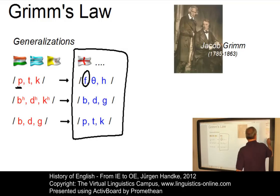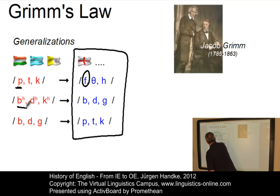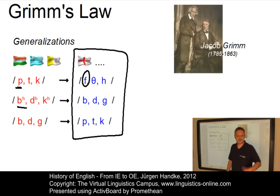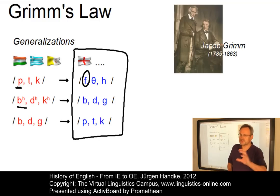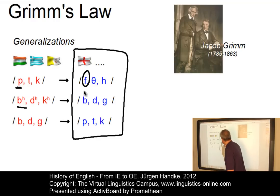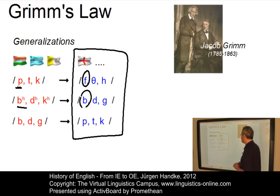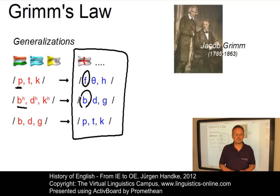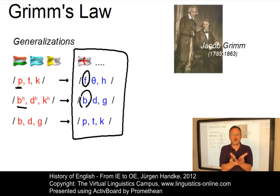Or take the initial aspirated voiced bilabial plosive as in Sanskrit 'bhrata.' In Classical Greek it was 'phrater,' and in Latin it was similar but labiodental, 'frater.' In Germanic the result is a simple voiced bilabial plosive, as in English 'brother' or in German 'Bruder.' Using the principles of Grimm's Law, we can establish a particular language family within the Indo-European family — this sub-family is referred to as Germanic.